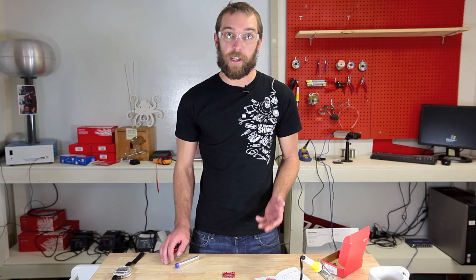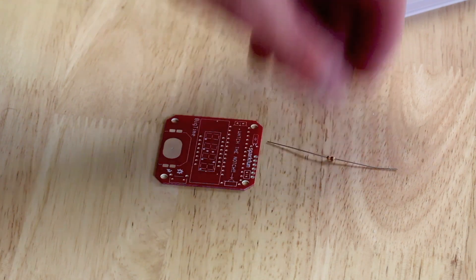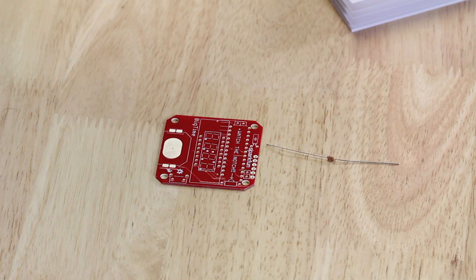The first component we're going to be soldering is a resistor. It's this little guy. If you hold it up with the gold band on your right, the color combination is brown, black, orange. So this is a 10K ohm resistor.